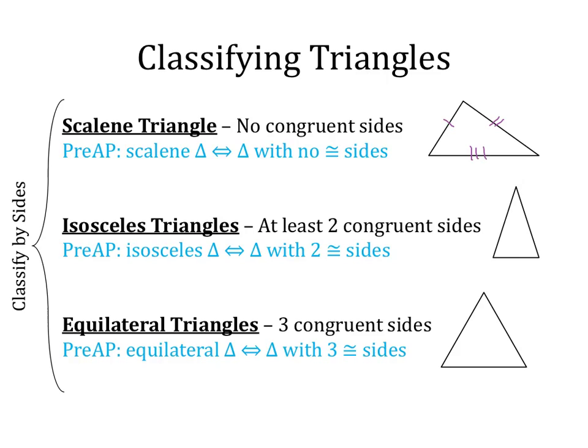Next, we have isosceles triangles. Isosceles triangles have at least two congruent sides, so you'll see two sides with the same number of tick marks, and then possibly a third side with a different number of tick marks. So my left and right sides are congruent, but my base, in this case, is not.